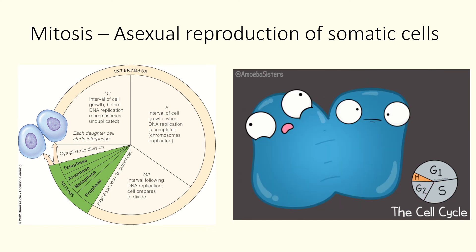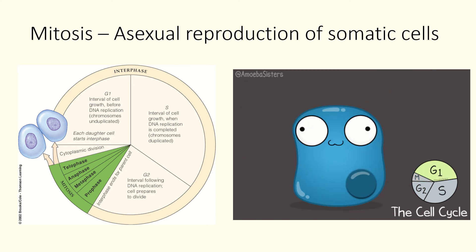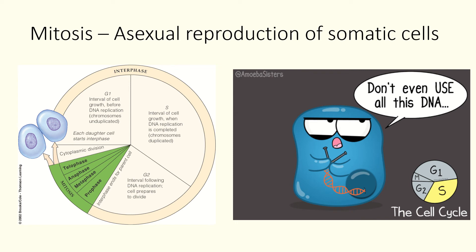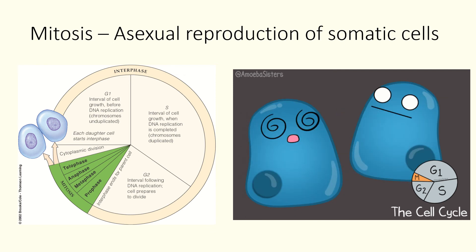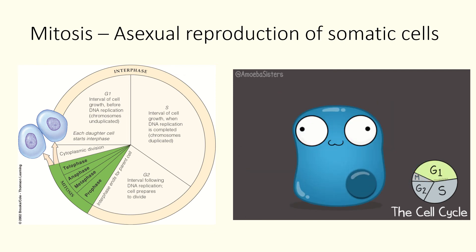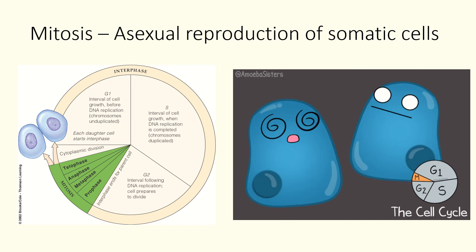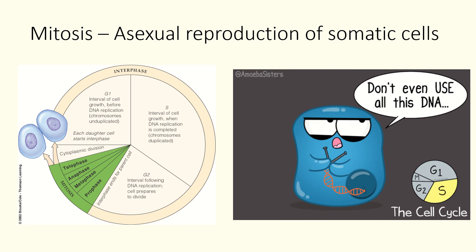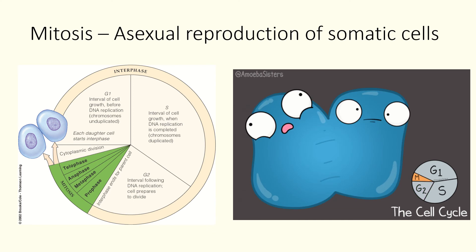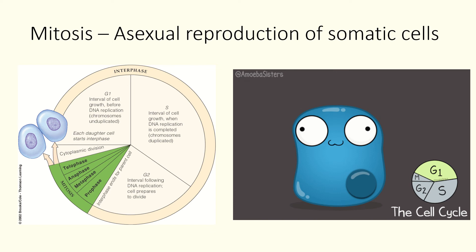In the G1 phase — interval of cell growth before DNA replication — G1 is basically what these cells would call life. Some cells can stay within that G1 phase for very long periods of time. If the cell then decides to move past that and undergo DNA replication, it will move into the S phase, when the cell is starting to get ready for DNA replication by condensing and duplicating the chromosomes. DNA replication occurs, and your chromosomes are duplicated. After that, G2, the cell prepares to divide, and then we move into mitosis.